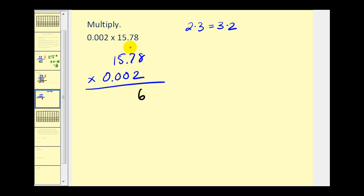8 times 2 is 16, carry the one. 2 times 7 is 14 plus 1, that's 15, carry the one. 2 times 5 is 10 plus 1 is 11, carry the one. Finally, 2 times 1 is 2 plus 1, that's 3. So we get 31,56.